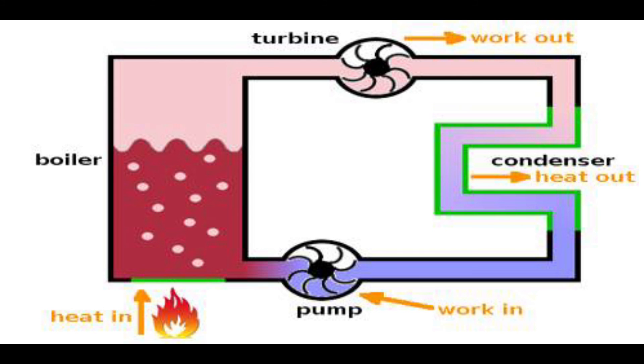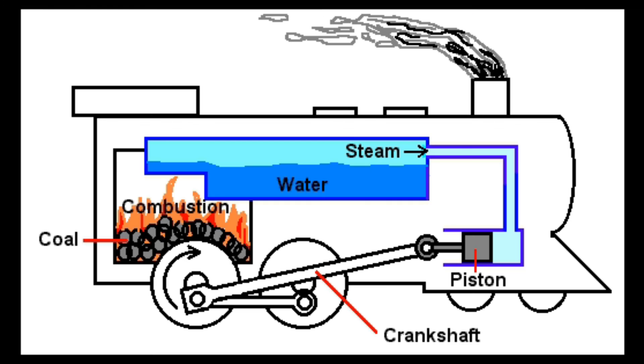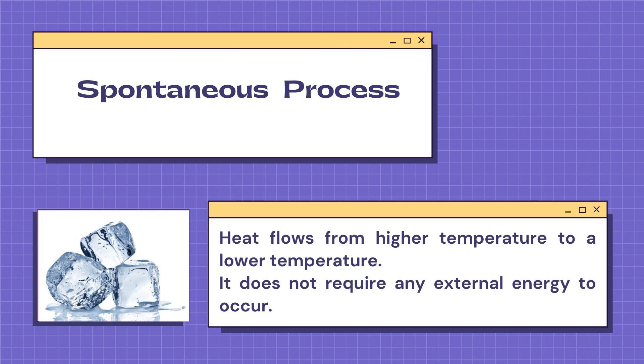The first law of thermodynamics applies the conservation of energy principle to systems where heat transfer and doing work are the methods of transferring energy into and out of the system. Now, what is the difference between spontaneous and non-spontaneous processes?